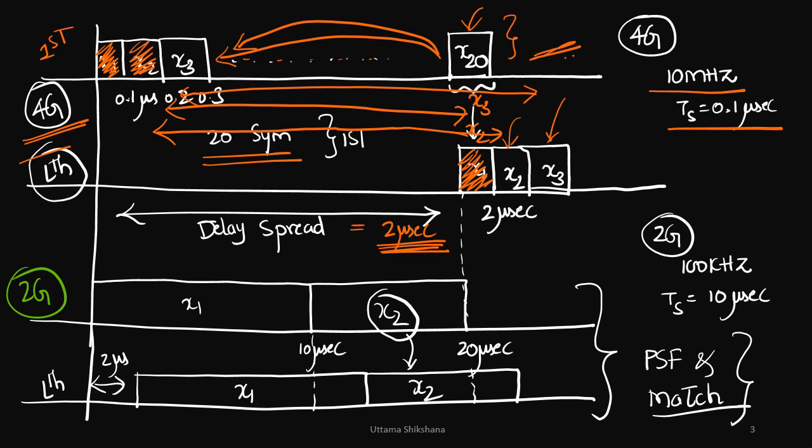I hope it is very clear. When the bandwidth is increased, because of multipath components, there is a delay spread of 2 microseconds, and because of which there is a huge inter symbol interference.